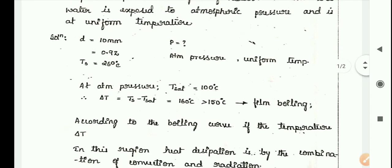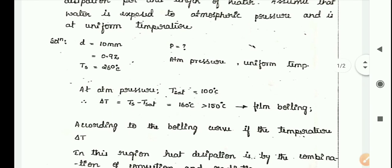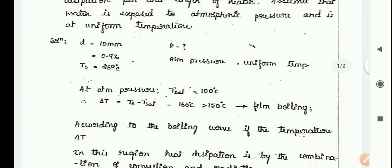At atmospheric pressure, Tsat is 100 degrees. We have to find Delta T, which equals Ts minus Tsat. So Ts is 260 minus Tsat 100, giving Delta T of 160 degrees, which leads to film boiling.